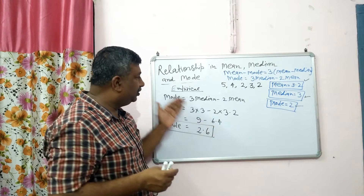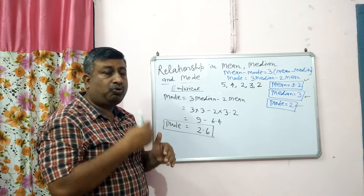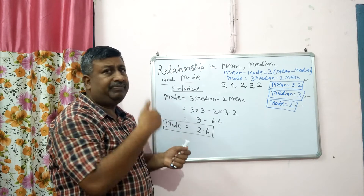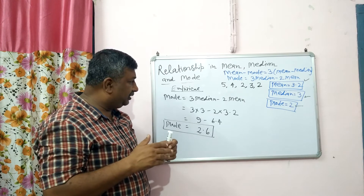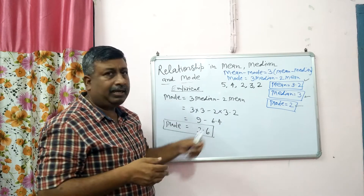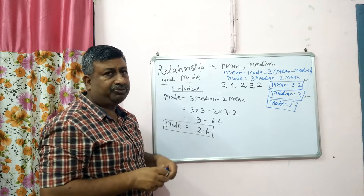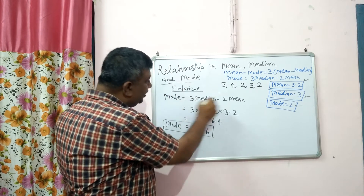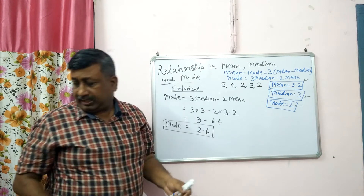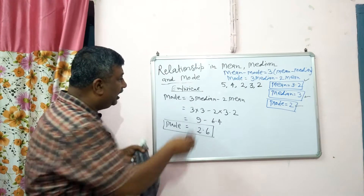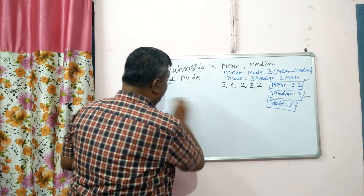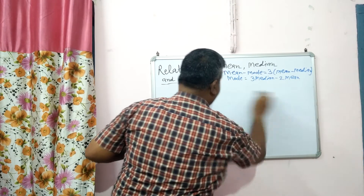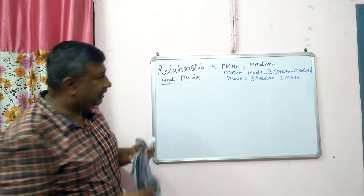So we can use the empirical formula to assess or approximate the value of mean, median, or mode. If two values are given, we can calculate the third. If median and mode are given, we can calculate the mean. If median is to be calculated, we need to know mode and mean. This is the empirical relationship — remember it for examinations.